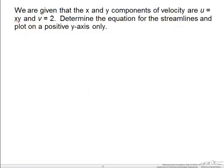In this problem we see that the x component of velocity is equal to xy and the y component of velocity is equal to 2. So the first thing we should do is write this out in vector form. We have xy times the i component plus 2 times the j component of velocity. So in this problem we want to determine the equation for the streamlines and plot on a positive y axis only.